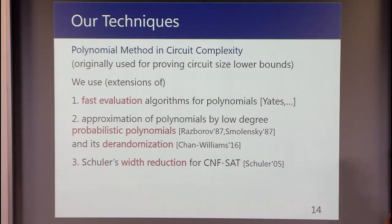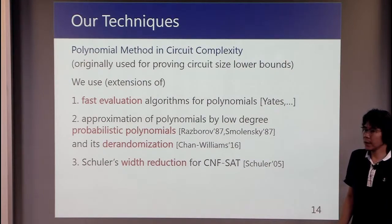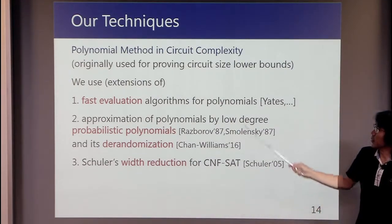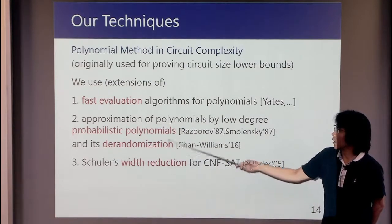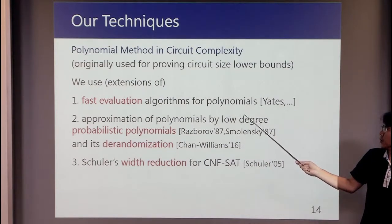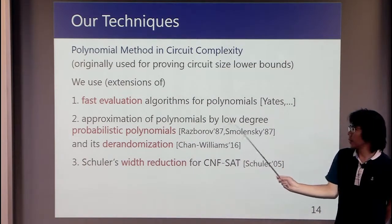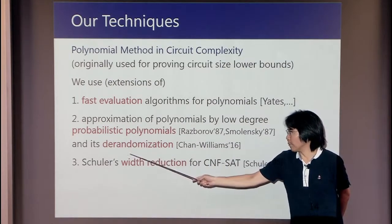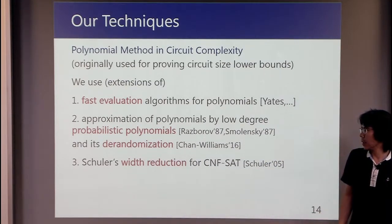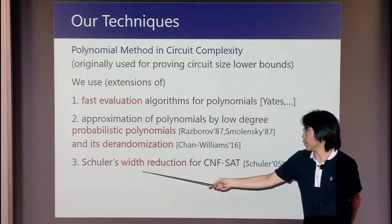This is a summary of our techniques. Our algorithm is based on the so-called polynomial method in circuit complexity, which is originally used for proving circuit-sized lower bounds. We use extensions of fast evaluation algorithms for polynomials due to Yates and other people, and approximation of polynomials by low-degree probabilistic polynomials due to Razborov and Smolensky. It's a randomization version due to Chang and Williams. We also use extensions of so-called Schur-Rado's width reduction for CNF-SAT.